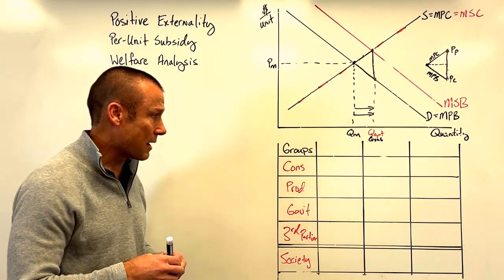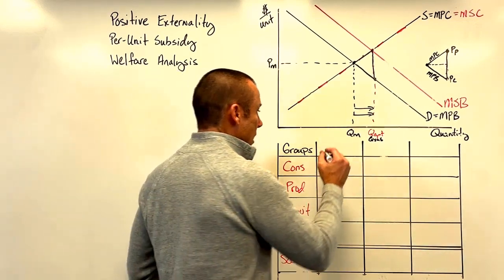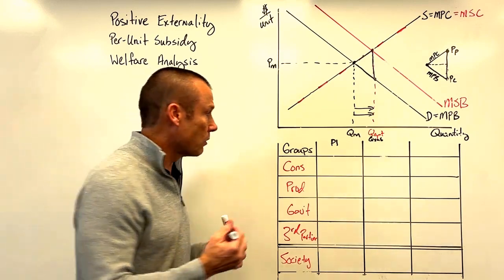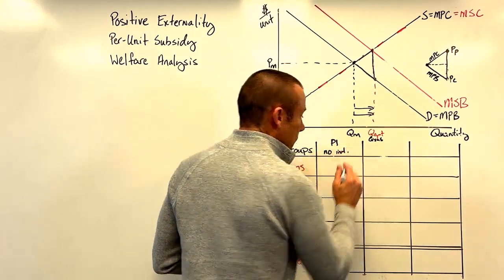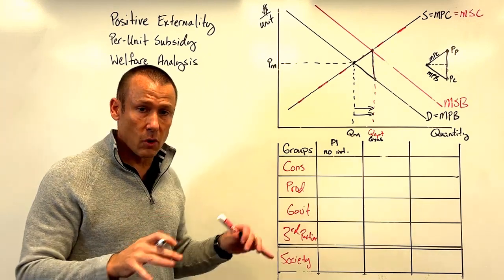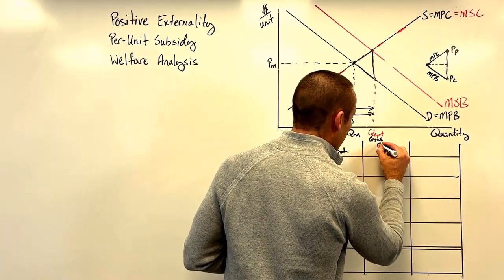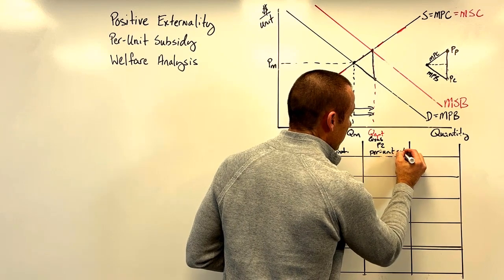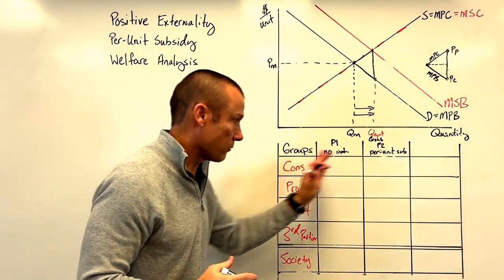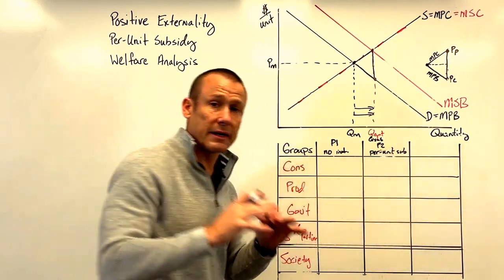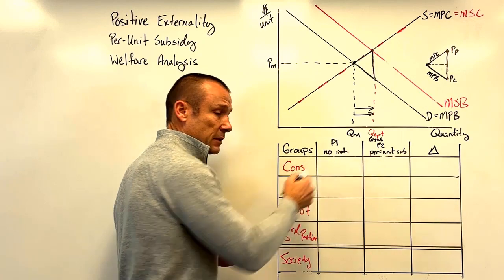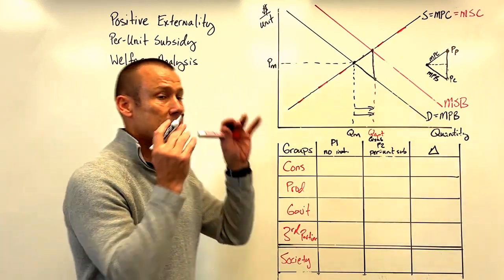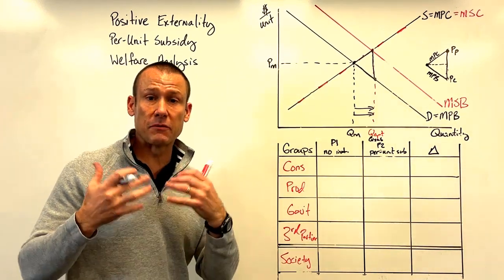We've got our groups and society at the bottom. Now we set up our columns. Policy one — sometimes I call it the status quo — is no intervention: we have a market failure, a positive externality, no subsidy. Policy two is our per unit subsidy. The third column — the delta — is always our comparison between the two policies. I like to say this is our most important column.